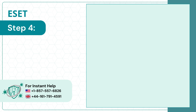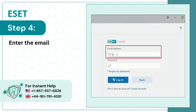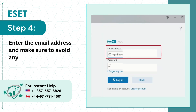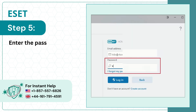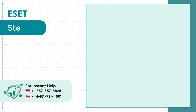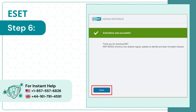Step 4: Enter the email address and make sure to avoid any mistakes. Step 5: Enter the password, then click Login. Step 6: Check and see if you're able to activate.